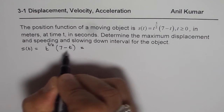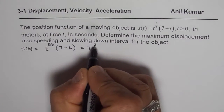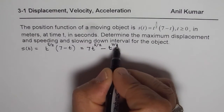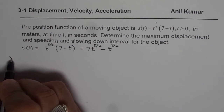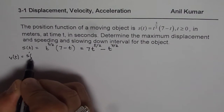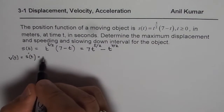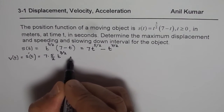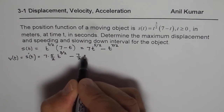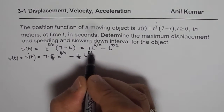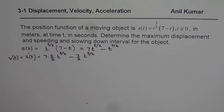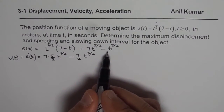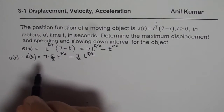So we rewrite the expression by expanding: s(t) = 7t^(5/2) - t^(7/2). Now the velocity, which is the derivative of displacement, gives us: v(t) = 7 * (5/2) * t^(3/2) - (7/2) * t^(5/2). This form is much simpler to work with. Whenever you have rational exponents, try to write the expression in expanded form and then find the derivative.